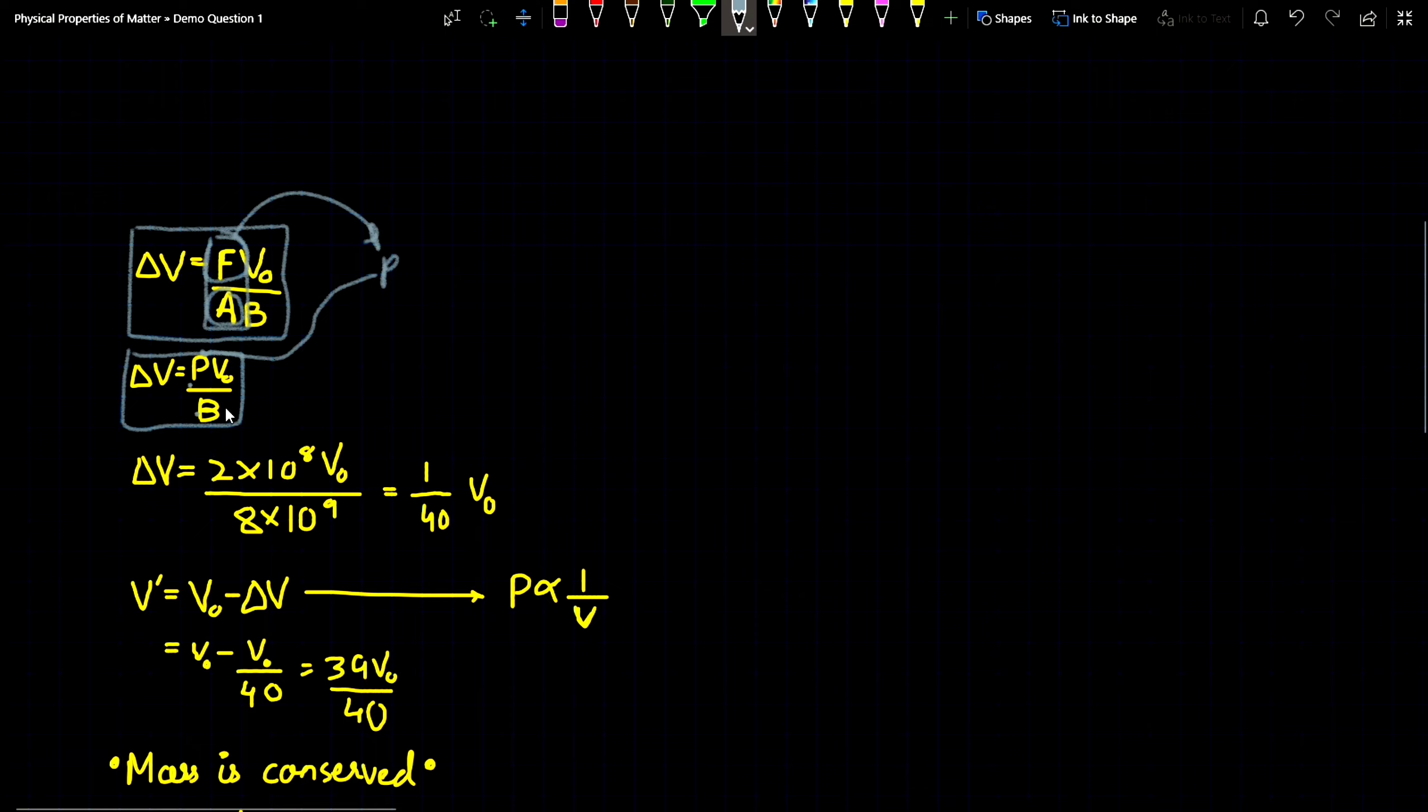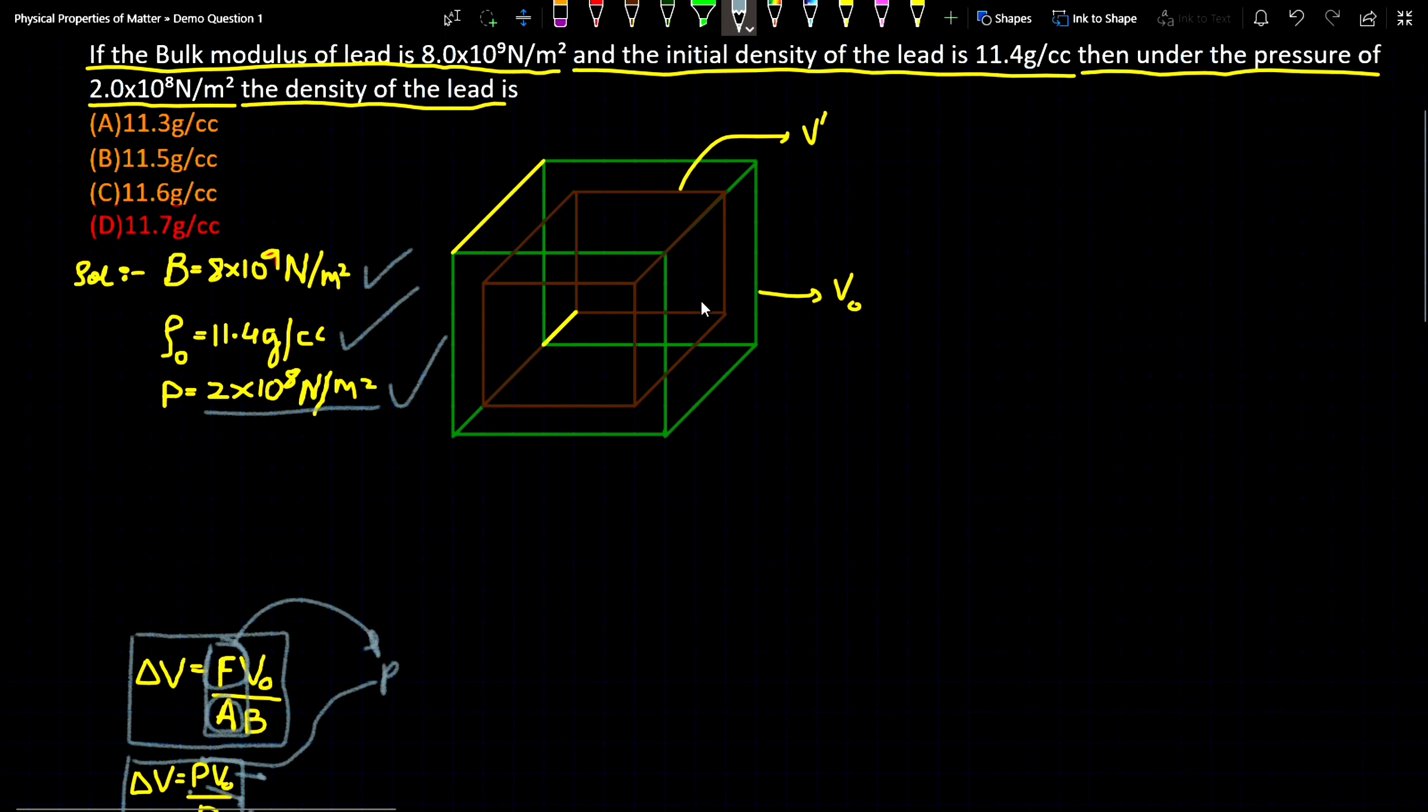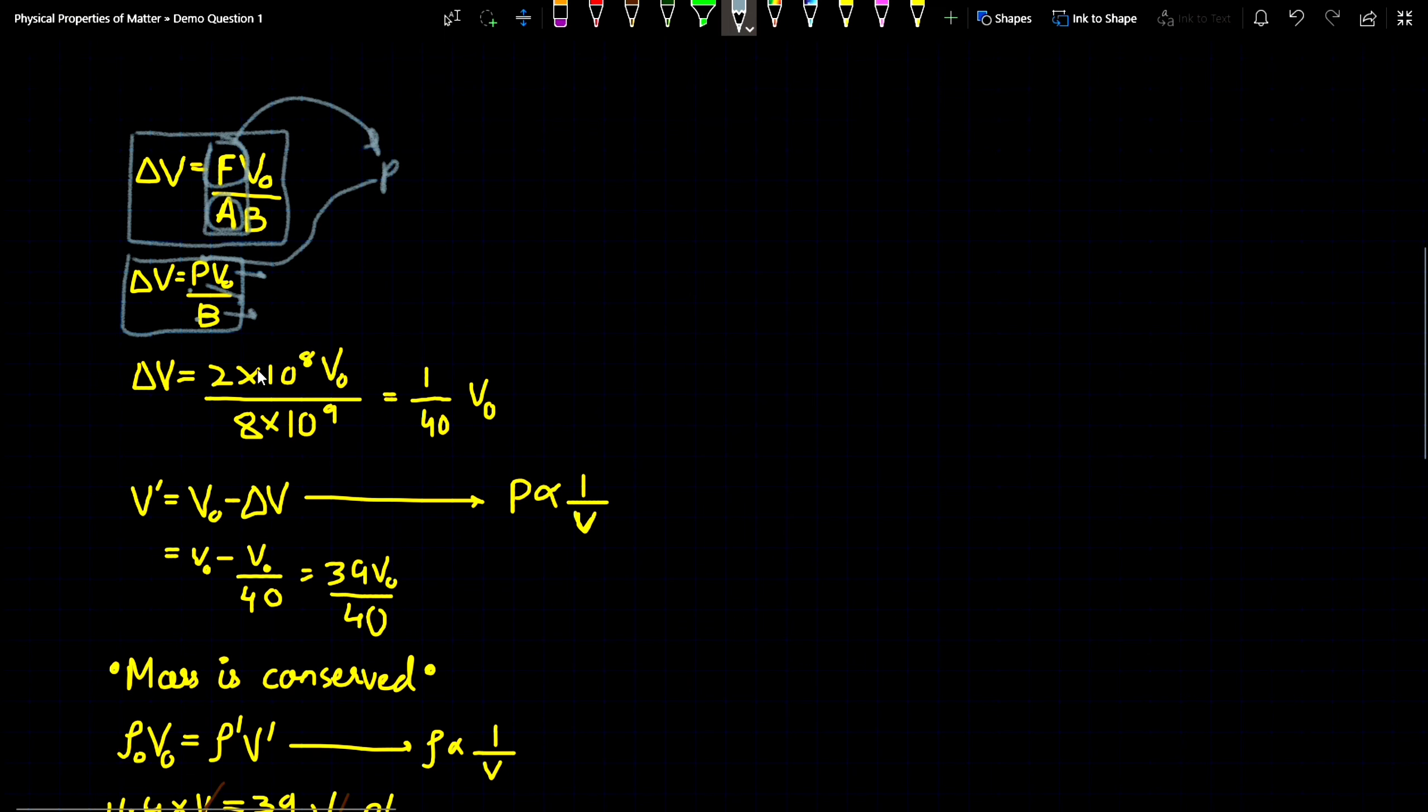Now just substitute the value of B and P. What is this V₀? In this figure you can see before compression the volume of this body is V₀ and after compression the volume is V'. The value of P is 2×10⁸ and B is 8×10⁹. After solving, ΔV is 1/40 V₀.